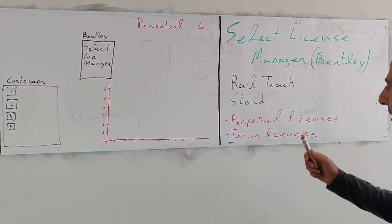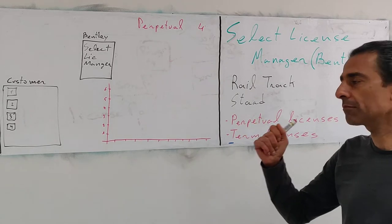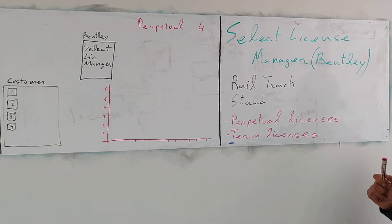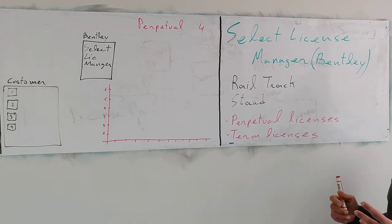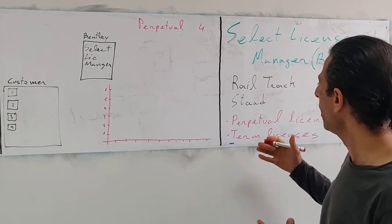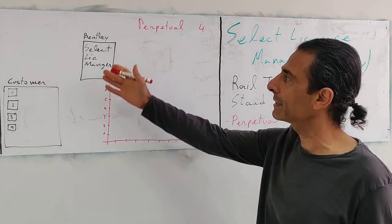So they have two types of licenses, perpetual licenses and term licenses, and they're combined. So let's see how it works by giving an example here.